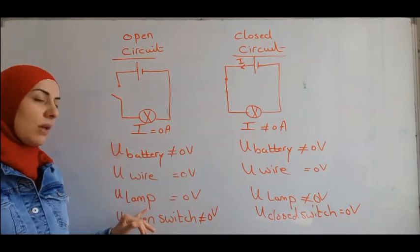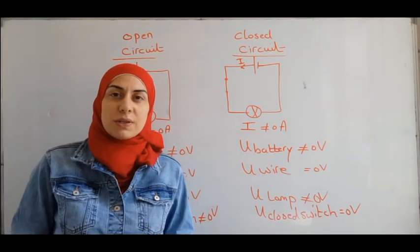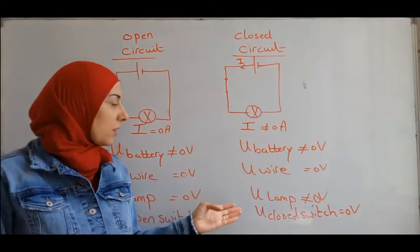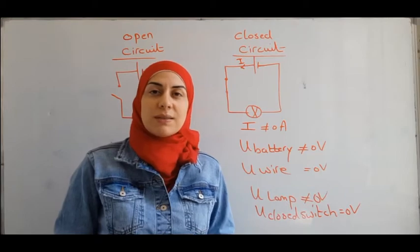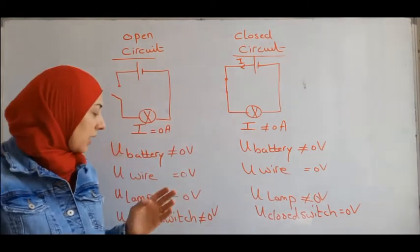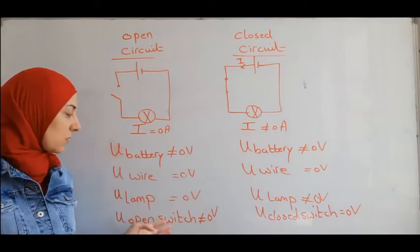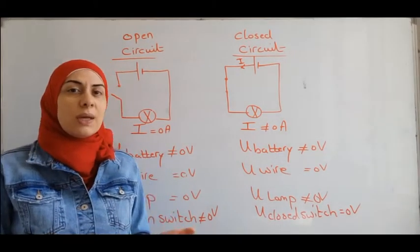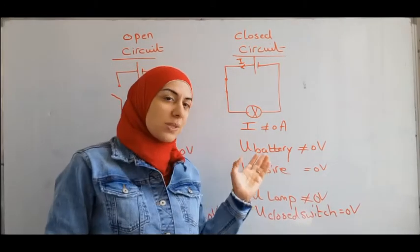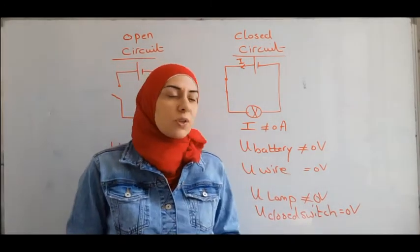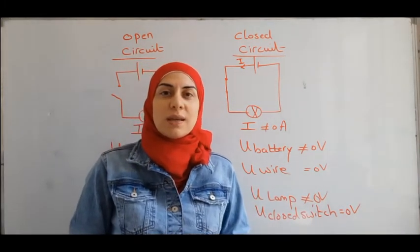In the case of an open circuit, the voltage across the lamp equals zero because no current is traversing the lamp. In the case of a closed circuit, the voltage across the lamp is different from zero because current is traversing it. In an open circuit, the voltage across the open switch equals the voltage across the battery, while in a closed circuit, the voltage across the closed switch equals zero because it acts as a wire.